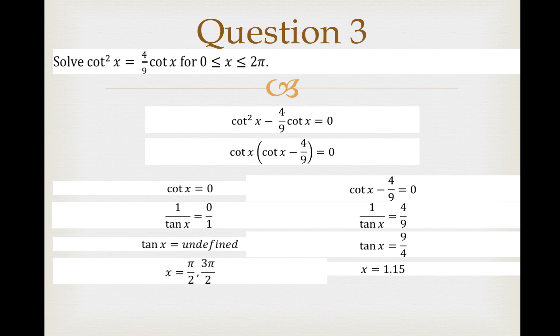From your calculator you can solve x = tan⁻¹(9/4) = 1.15. Just make sure that your calculator is in radian mode. Of course, there's another solution. It is positive, so tan x is positive.